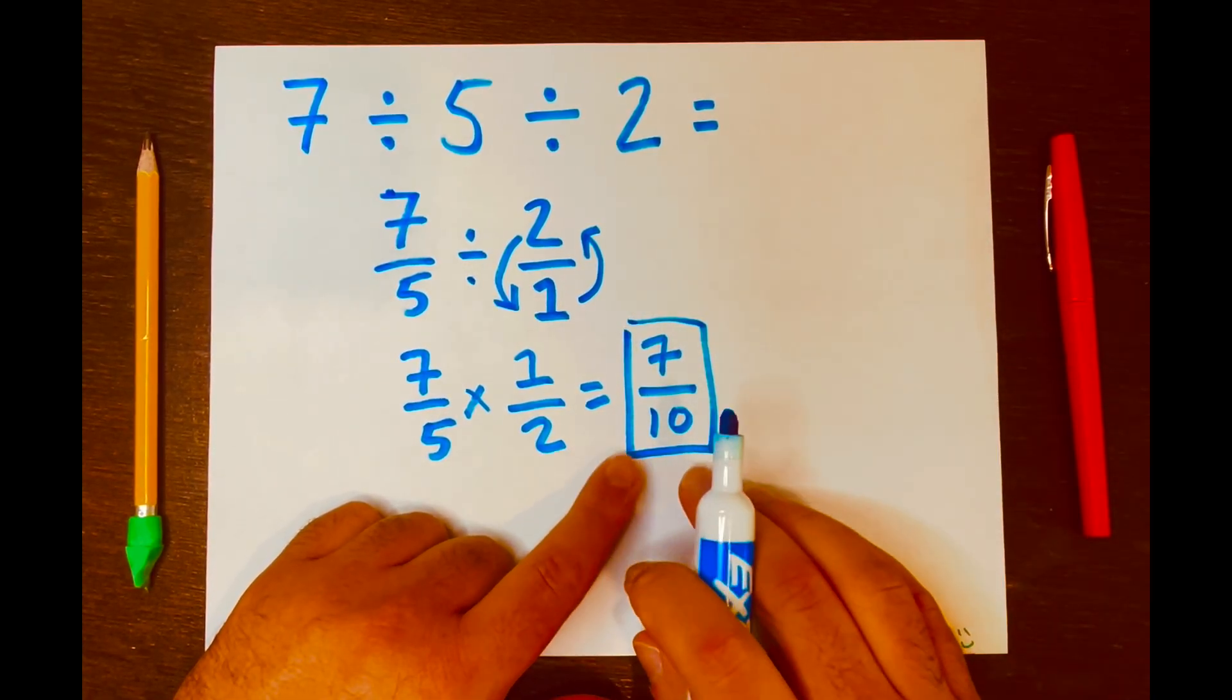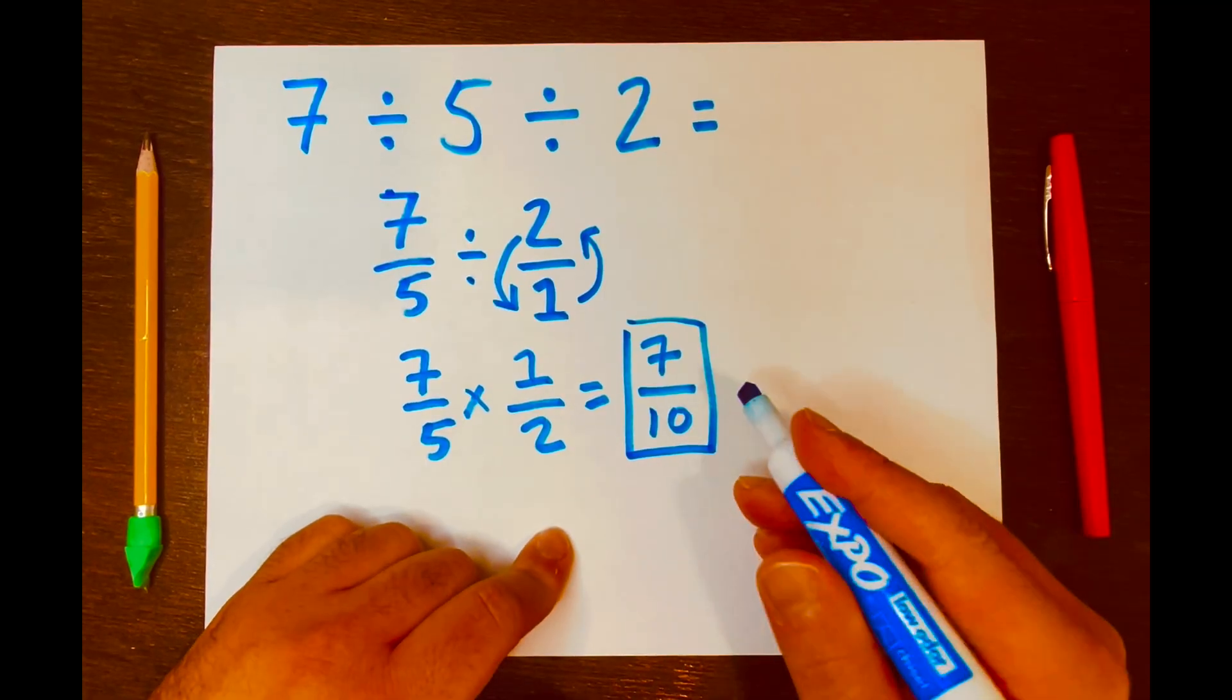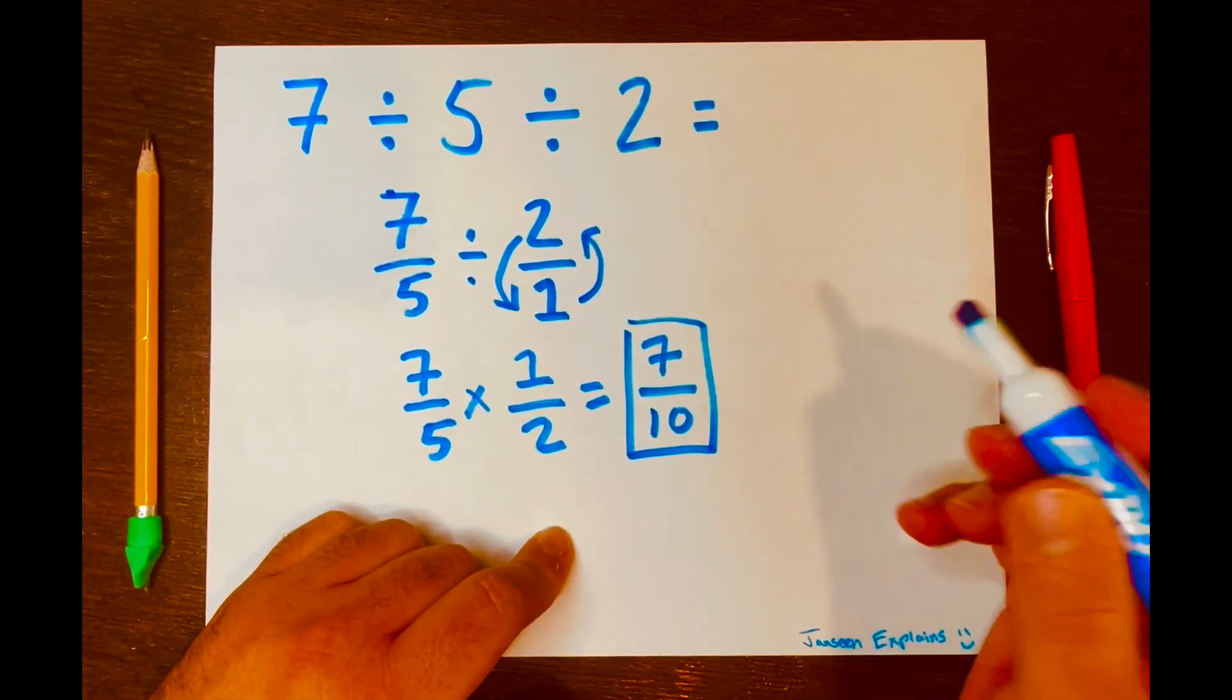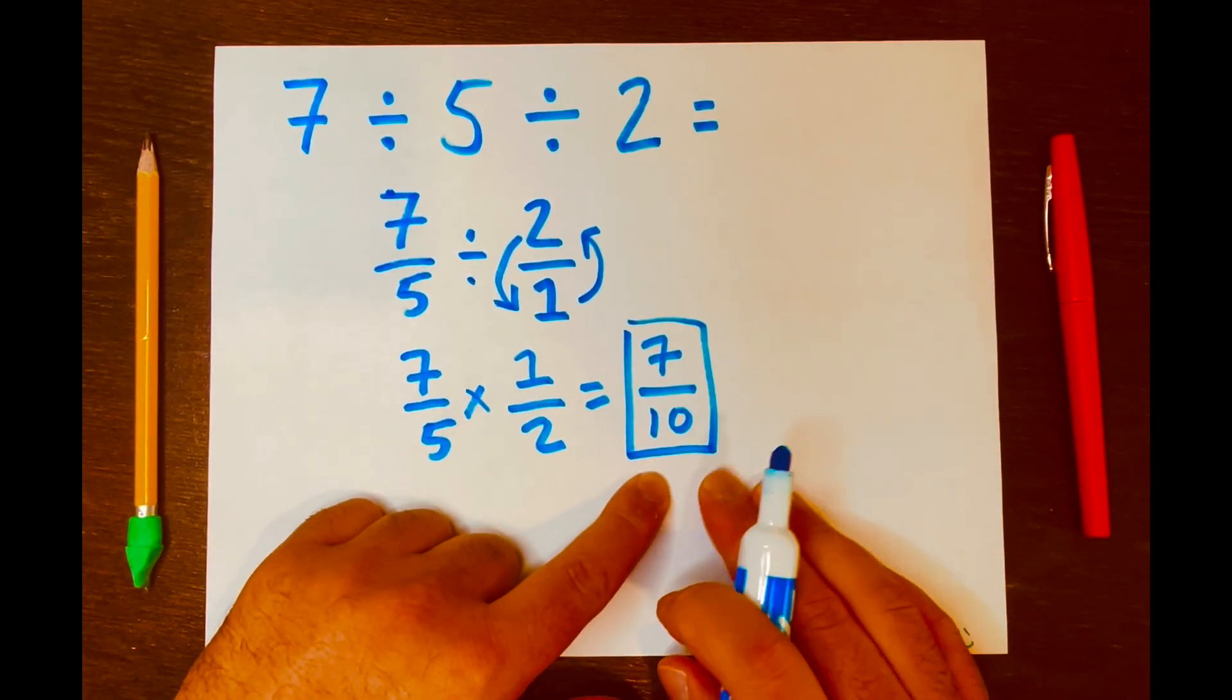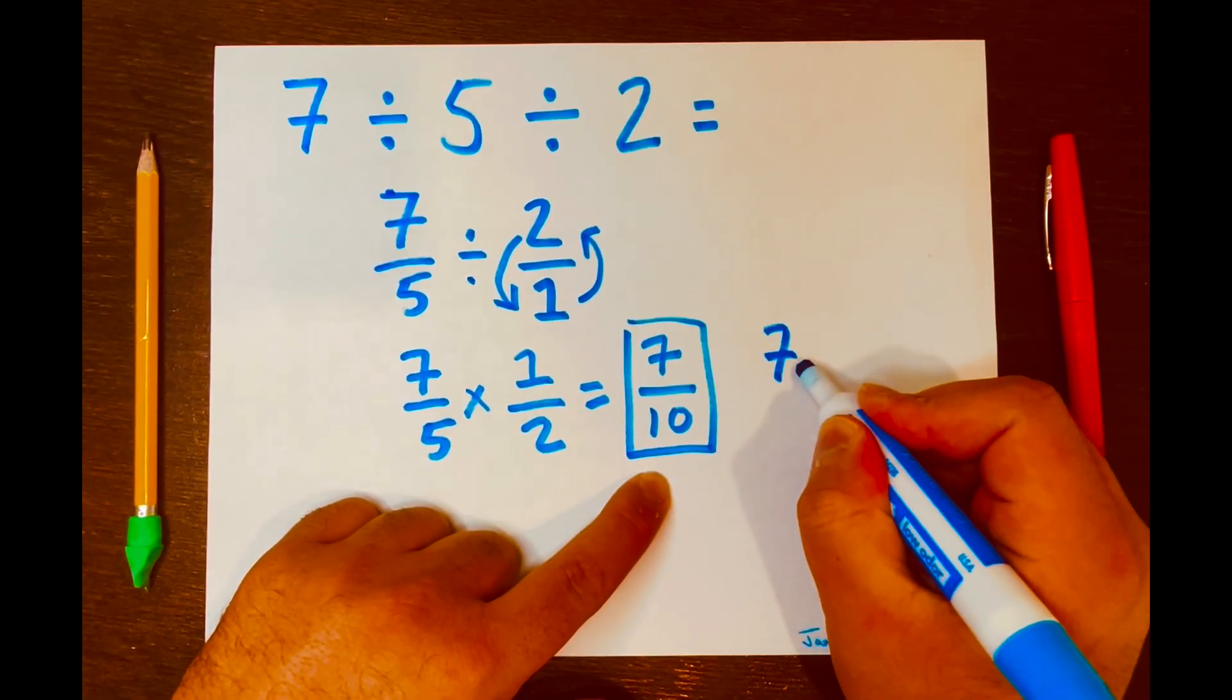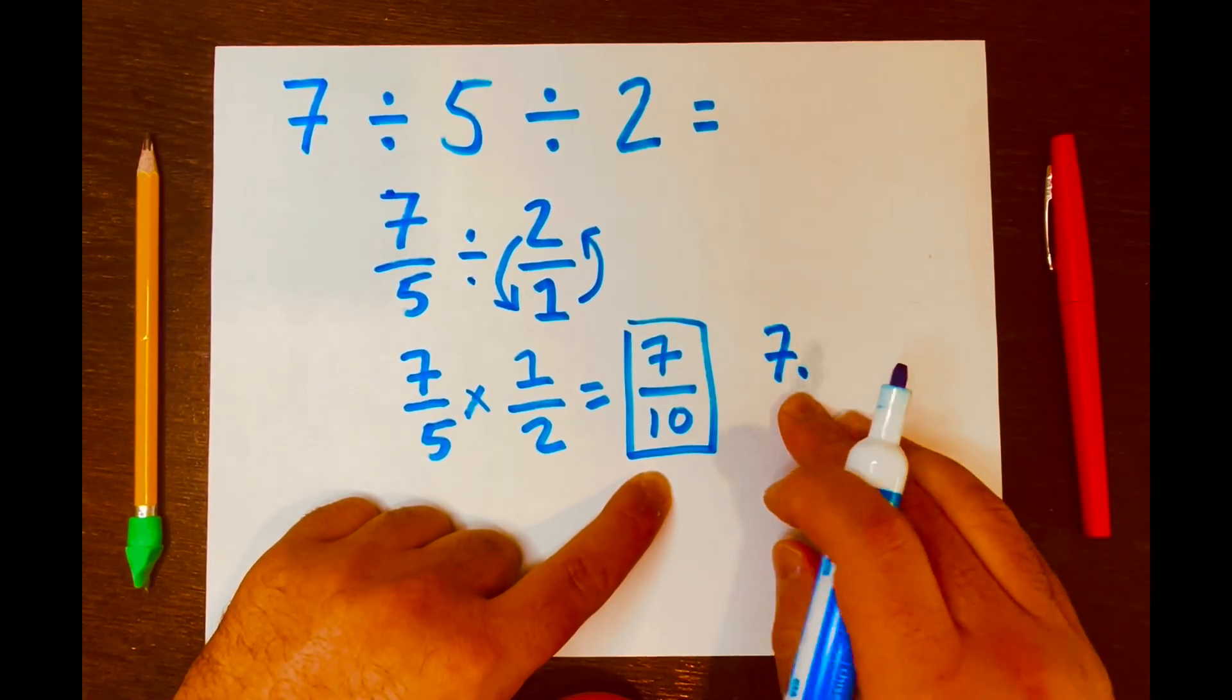Now let's get a decimal answer for this. And we can use the traditional way to solve this by using long division. Or you can just move the decimal. So know that there is a decimal after the 7.